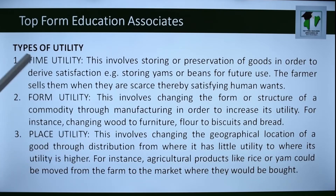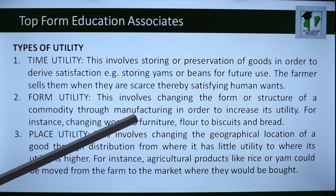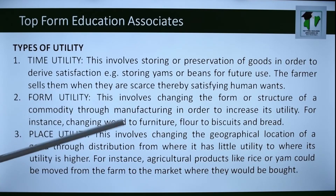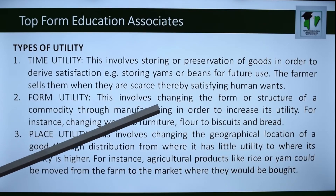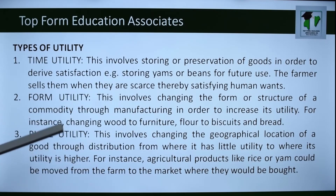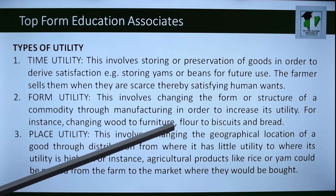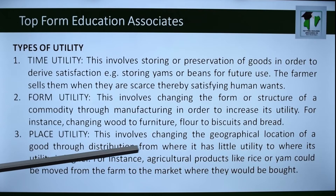Form utility involves changing the form or structure of a commodity through manufacturing. For example, flour does not give utility until you transform it into something like bread, biscuits, or any beverage. Similarly, transforming wood by changing its form into furniture gives you satisfaction — you can sit on furniture.